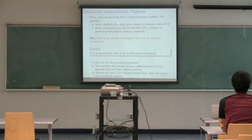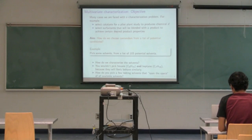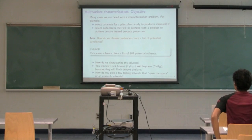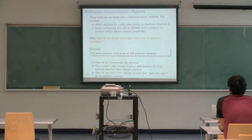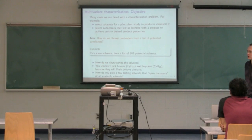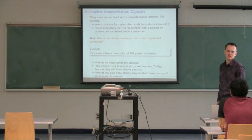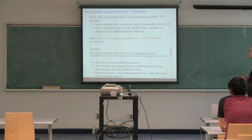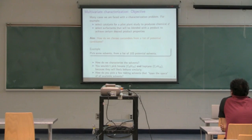Today's class is all about running our latent variable models backwards—going back from the scores to the original data, or from the y variables in PLS to the original x's. To get there, I wanted to cover the topic of multivariate characterization first, because it leads naturally into what we're heading towards at the end, which is product development, where we actually run the models backwards.